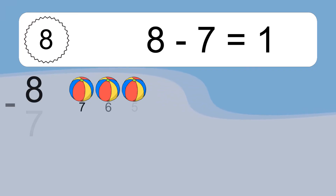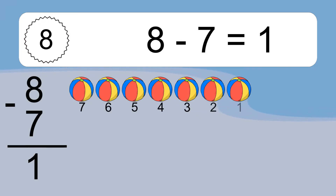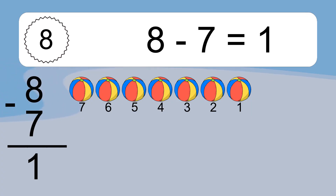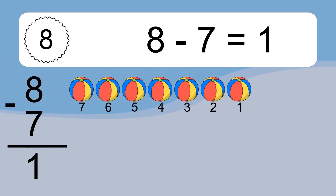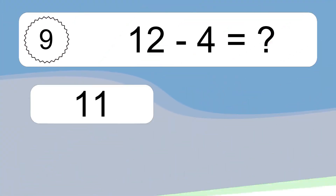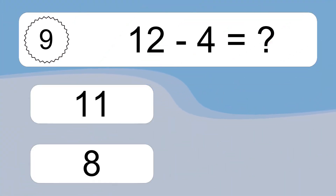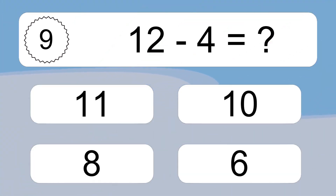8 minus 7 equals what? 8 minus 7 equals 1. Let's count it: 7, 6, 5, 4, 3, 2, 1.